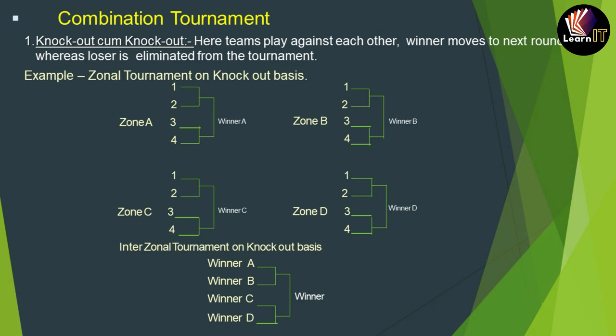After the first knockout phase, we have four zonal winners. Since the format is knockout-cum-knockout, there will be a second knockout stage. This is called the interzonal tournament on a knockout basis. Winner A plays Winner B, and whoever wins goes to the finals. Winner C plays Winner D, and whoever wins goes to the finals. Ultimately whoever wins the final is declared the overall winner. This is the basic knockout-cum-knockout tournament.